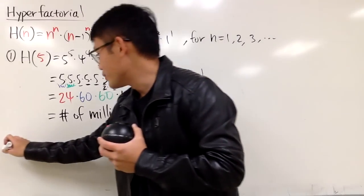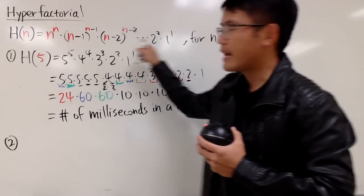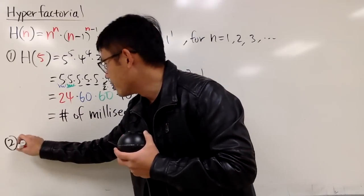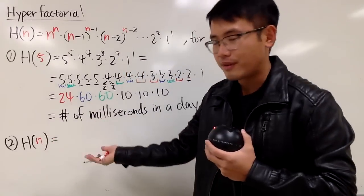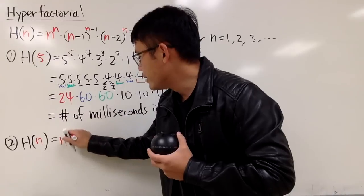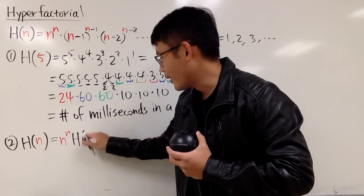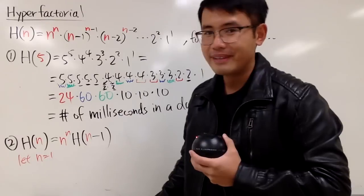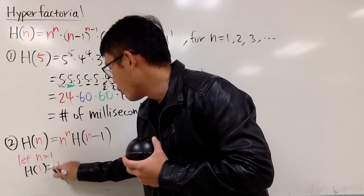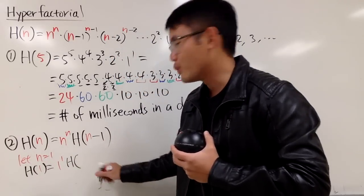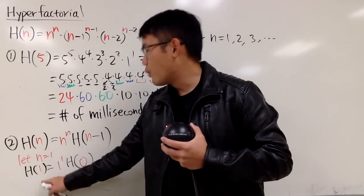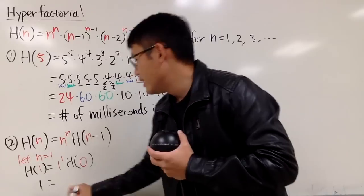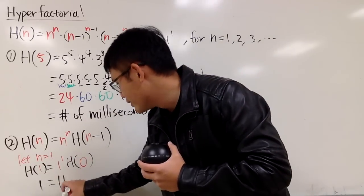I'll show you guys the second interesting thing. Looking at the definition again, part of it is the same as h of n minus 1, so we can come up with a recursive formula: h of n equals n to the n times h of n minus 1. Now I'll plug in n equals 1. We get h of 1 equals 1 to the first power times h of 0. But h of 1, by definition, is just 1 to the first power, which equals 1. So we have 1 equals 1 times h of 0, meaning h of 0 equals 1.